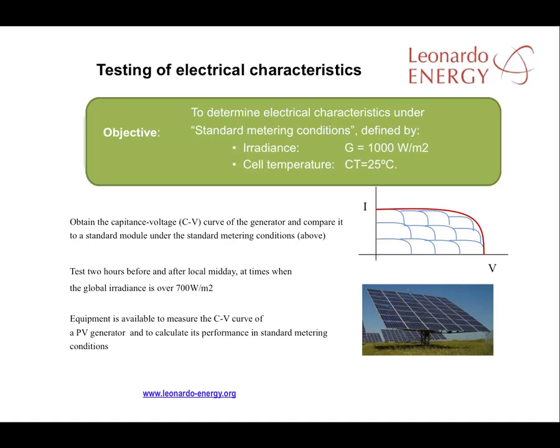The electrical characteristics of the PV generator should be checked against data for standard metering conditions — that's where the irradiance is one kilowatt per meter squared at a cell temperature of 25 degrees centigrade. By comparing the actual curve from the generator to the curve from that standard model, the performance of the PV generator can be established.